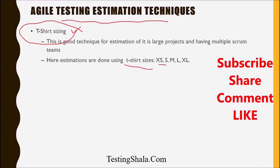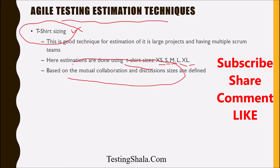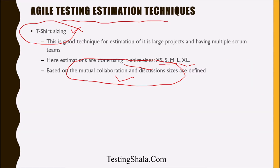The t-shirt sizes used are XS, S, Medium, Large, and Extra Large. These are the terminologies used when performing estimation for t-shirt sizing. The sizes and their efforts are defined in a mutually collaborated way. Every project can have different sizes, but we should clearly define what the different sizes mean before going into the estimation room.